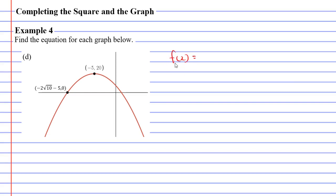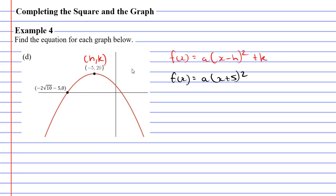Remembering that my function will be in the form A times (x minus h) squared plus k. Here's my vertex in the form h comma k. We can see that h is negative 5 and k is 20. So if I put negative 5 in place of h, I'm going to have x minus negative 5, which is the same as x plus 5. So we'll write this as A times (x plus 5) squared plus 20. We need to find A by looking at our second point. We are told that when x equals negative 2 root 10 minus 5, our function will equal 0.